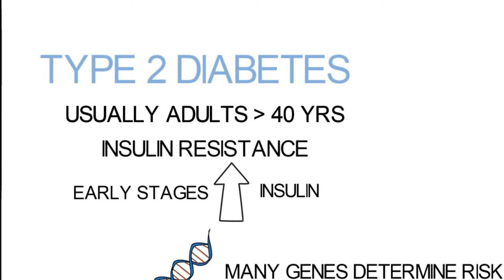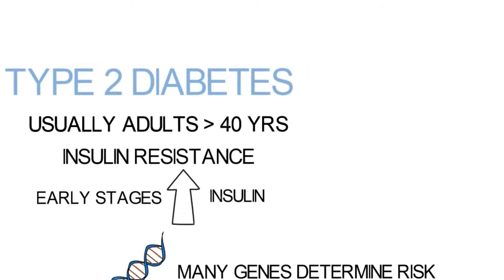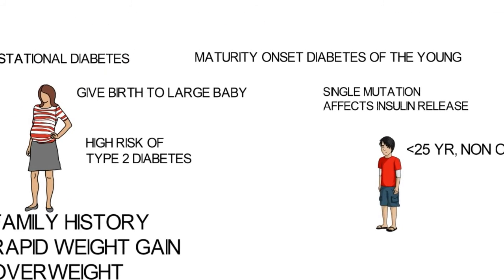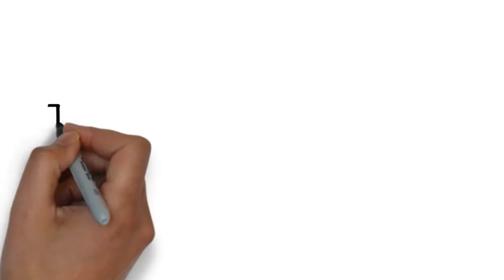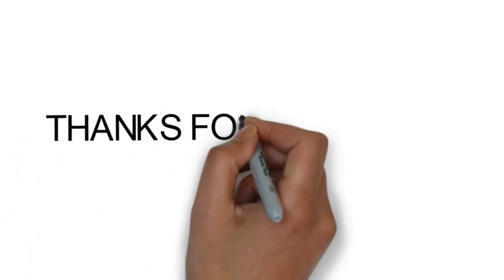Over the years, the pancreas cannot cope to produce sufficient insulin, and eventually even type 2 diabetes can become dependent on insulin. Gestational diabetes develops during pregnancy in individuals who have risk factors. Maturity onset diabetes of the young is seen in young non-obese individuals due to a single genetic mutation which prevents the release of insulin from the pancreas.